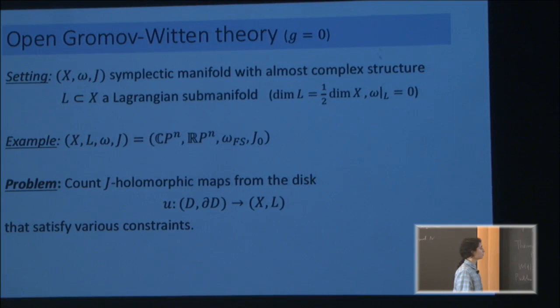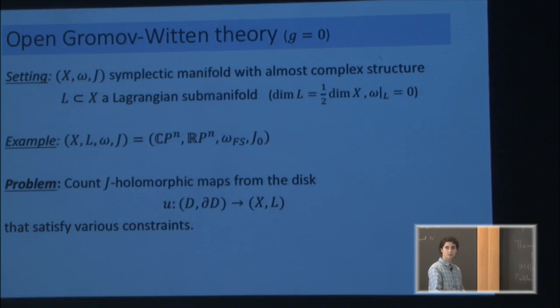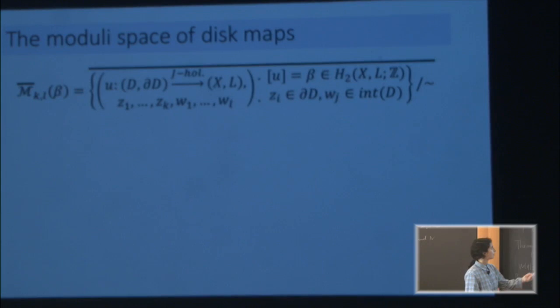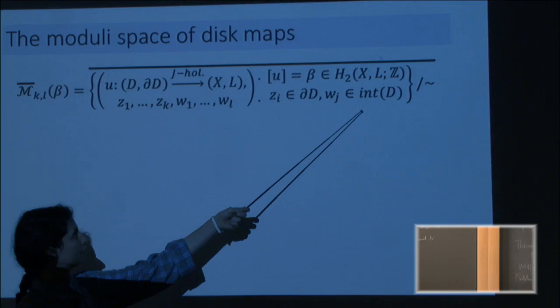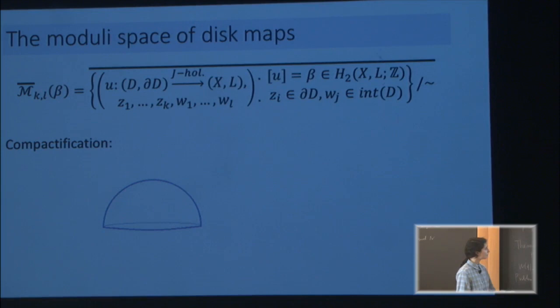Again we ask the same question. I take a hemisphere — a disk — and its boundary, and we map them holomorphically into the space so that the boundary goes entirely to L. Again we want to count these creatures, possibly with some constraints. The relevant moduli space for that problem again looks like a space of maps. Marked points could be either at the boundary or at the interior; I still want them to be distinct. Again we have reparameterization and compactification.